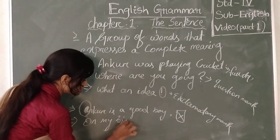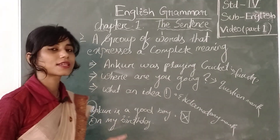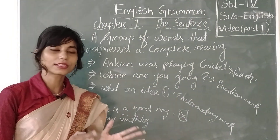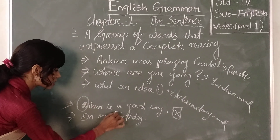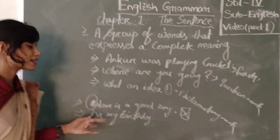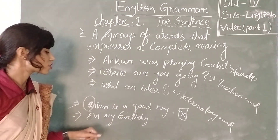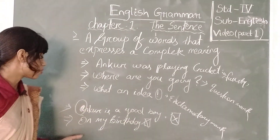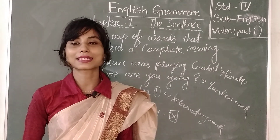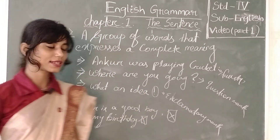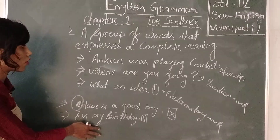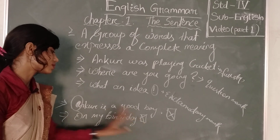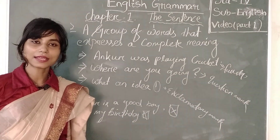One more thing I would like to tell you. A sentence always contains a verb with an object part. For example: 'On my birthday.' What is on my birthday? There is nothing — it is not expressing a complete meaning. So this sentence is not expressing a complete meaning and we can't call it a correct sentence. It is incorrect because it is not containing a verb. And there is no sign at the end. So 'On my birthday' is not a sentence.